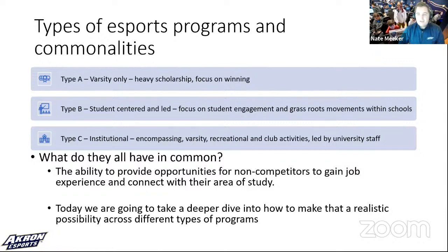The Type B program is a student-centered and led program, maybe a community-led program as well, with a focus on engagement and grassroots movements where the community is hosting a variety of different events. Some may be competitive in nature, others might not be — the primary focus is engaging the community. Type C is more of an institutional-type program, which is the type we operate at the University of Akron — led by the institutional arm of the university, covering the varsity side, the club side, and the recreational and community side.